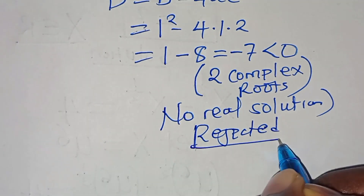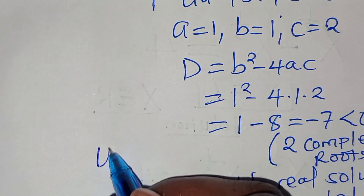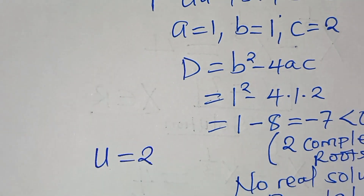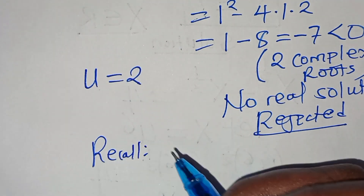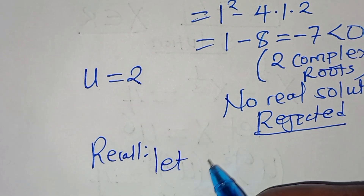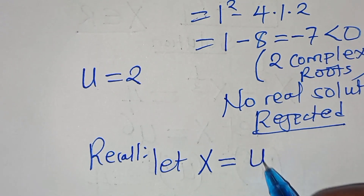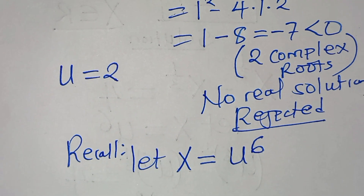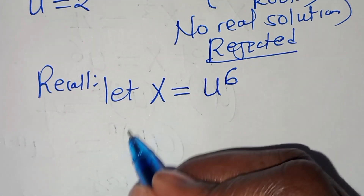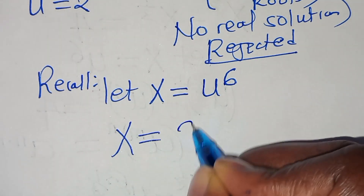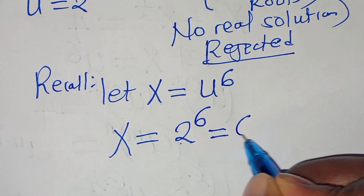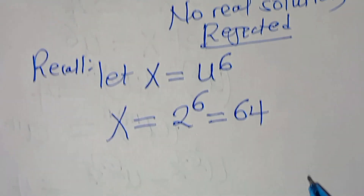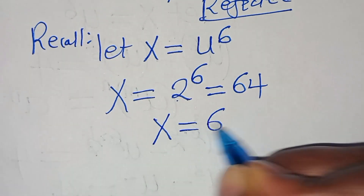So, let's focus on u equal to 2. We have u equal to 2. If you recall, we have seen that x is equal to u to the power of 6. Let's substitute u, so that we have x is equal to 2 to the power of 6. So 2 to the power of 6 is equal to 64. So x here is equal to 64.